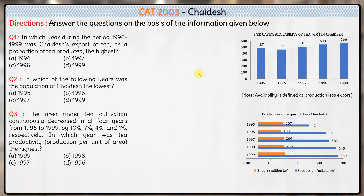Hello everyone. Now coming to the set which is based on Chayadesh. Here you are given certain data about per capita availability of tea in Chayadesh, and production and export of tea in the same country Chayadesh. Availability here is defined as production minus exports.